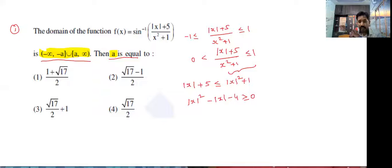Here split into factors. So I think factors not possible. So go formula method. Mod x is equal to minus b plus or minus under root b square minus 4ac, 4 into 4, 16 by 2. Overall we are getting 1 plus or minus root 17 by 2.